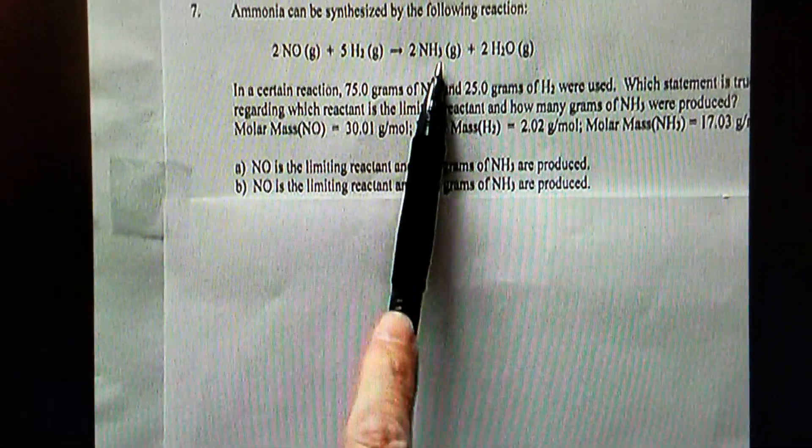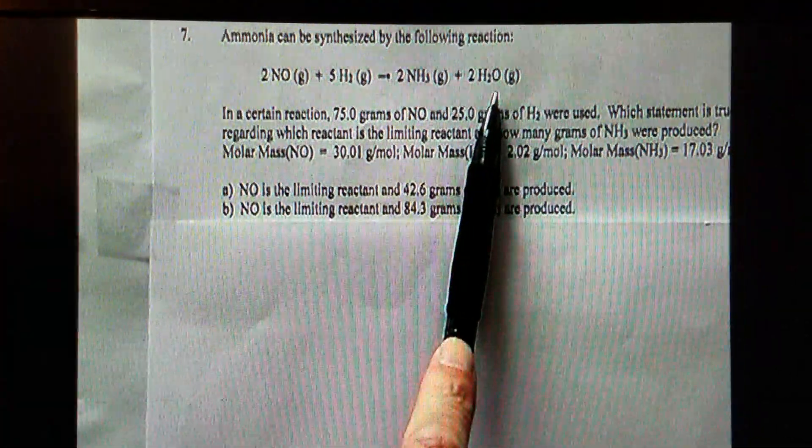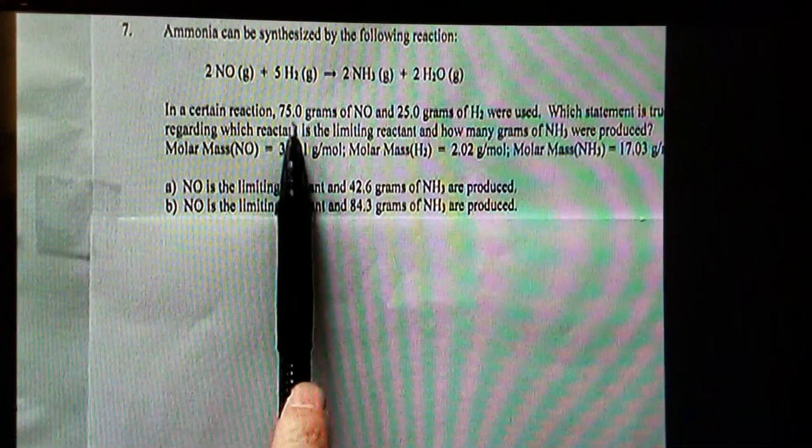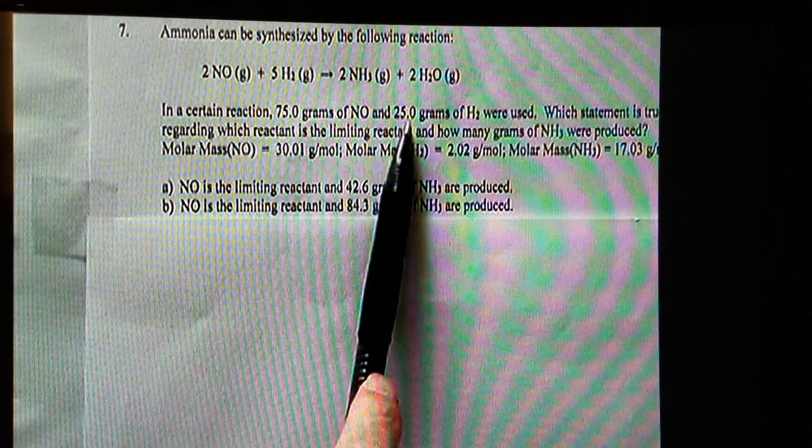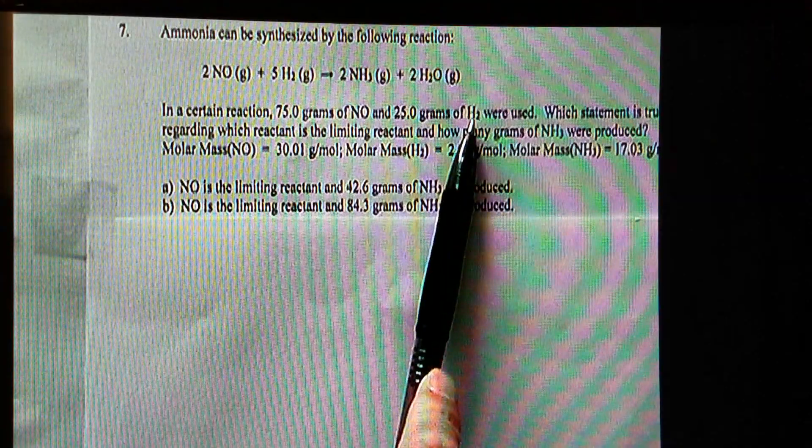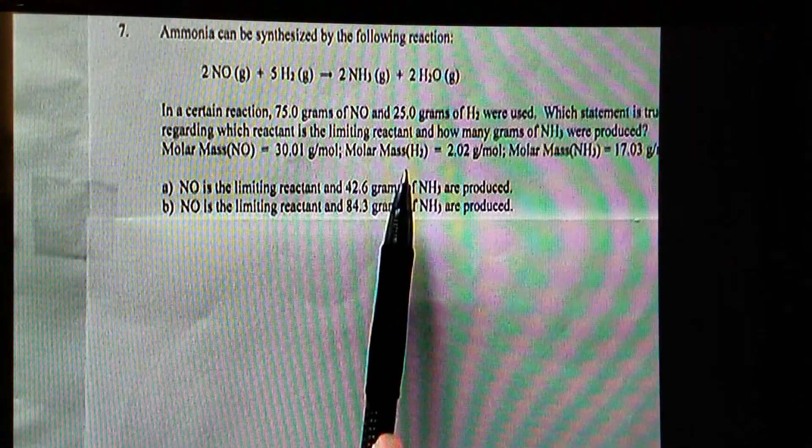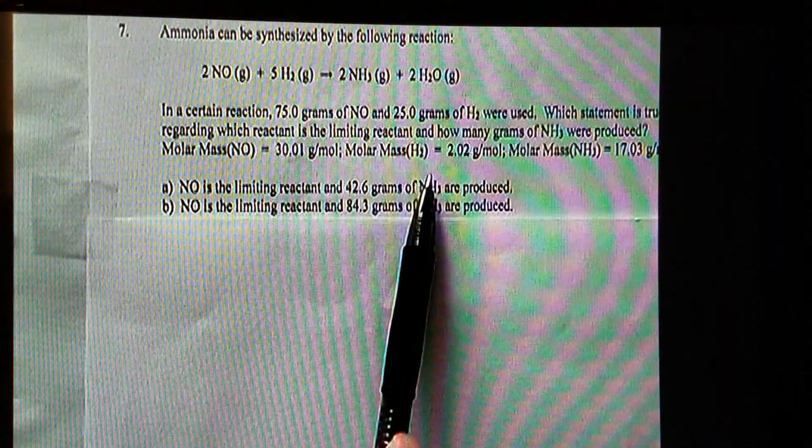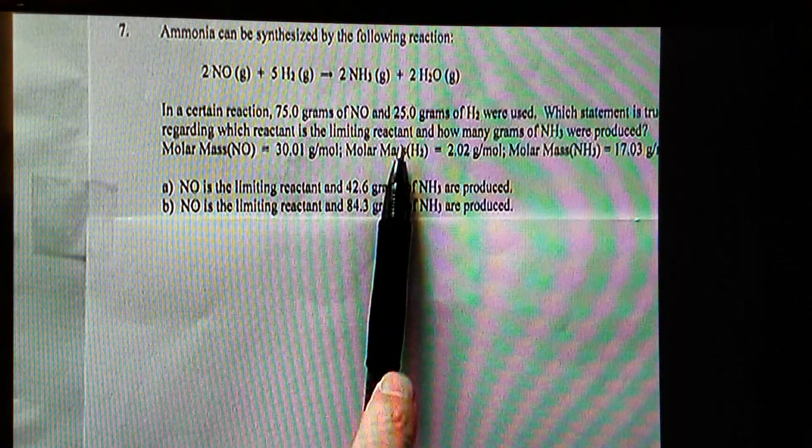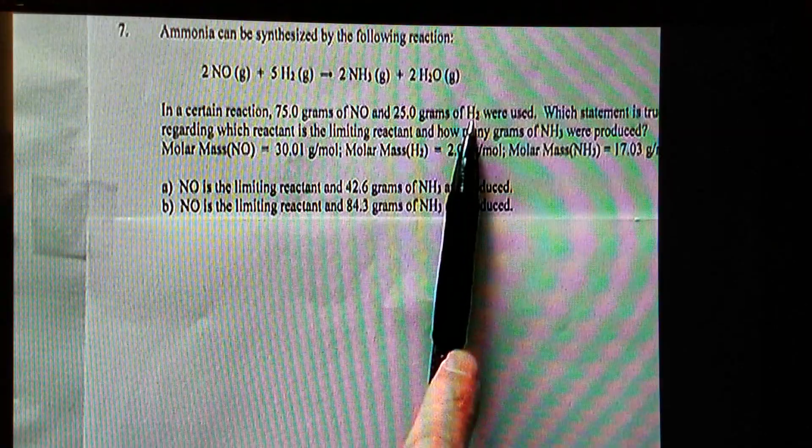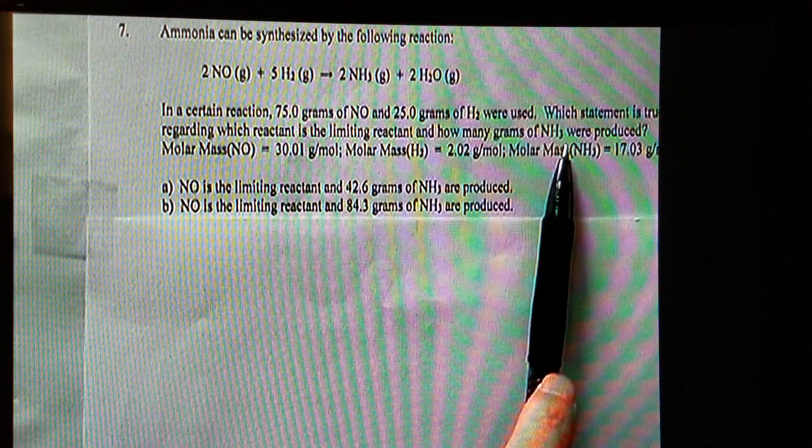Ammonia can be made according to this balanced chemical equation. We know 75 grams of nitrogen monoxide and 25 grams of hydrogen were used for this reaction. We need to find out which one is the limiting reactant, NO or H2, and how many grams of ammonia were produced.